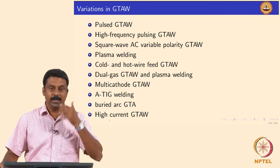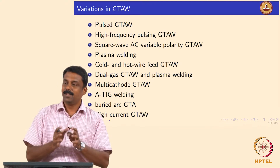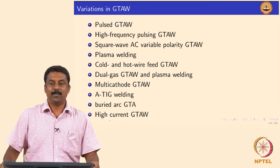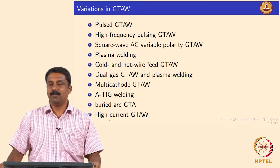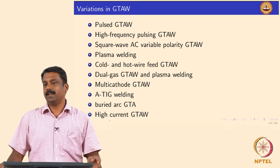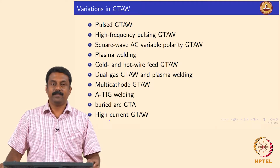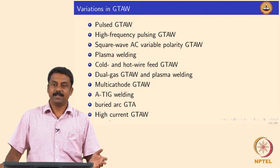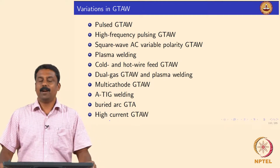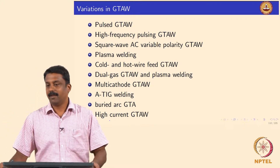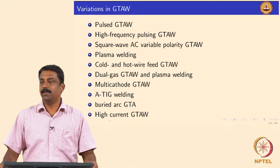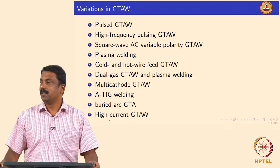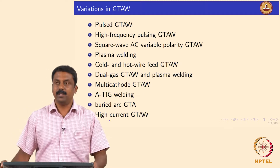We will move on to the variations of GTAW. We looked at all the main components: power source, shielding gas, and arc — these are the three important components in a welding circuit. Now we will see how we can carefully modify these to improve the welding characteristics, change the microstructure, increase productivity, improve weld geometry, appearance, and aesthetics. By carefully manipulating the physics of the arc, the waveforms, and the power sources, we can improve process stability and weld characteristics significantly. We will see some improvements that happened in GTAW in subsequent slides.